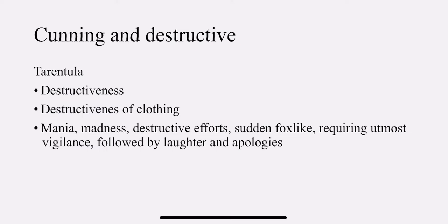Cunning and destructive. Tarantulas have destructiveness — destructiveness of clothing. They become angry to such an extent that they are going to be destructive; they are going to tear clothes. Mania, madness, destructive efforts. Sudden, fox-like — they have madness. They are fox-like, that is cunning. Fox is really cunning by nature, and in the same way spiders are really cunning. Requiring utmost vigilance, followed by laughter and apology — they laugh and then apologize.